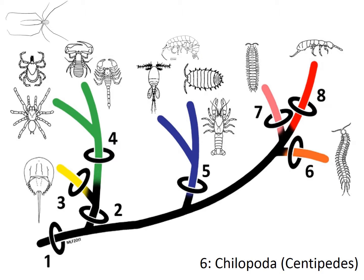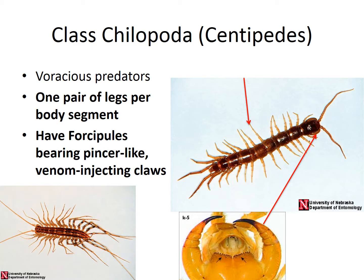First, the Chilopoda — centipedes. The class Chilopoda, or centipedes, are voracious predators; they all hunt for their prey. They're defined by having one pair of legs per body segment, and also a pair of pincher-like, venom-injecting claws in front of their mouth called forcipules. The name Chilopoda comes from those forcipules — chilo meaning lip, and poda meaning foot. There are some fairly large species with a venomous and painful bite, not something you want to go picking up.